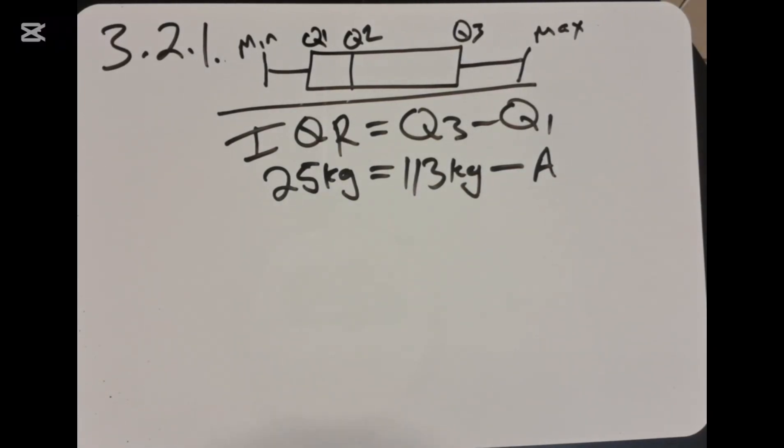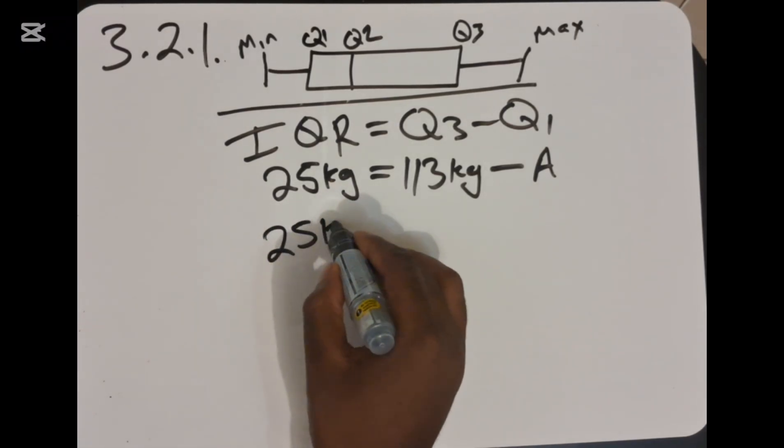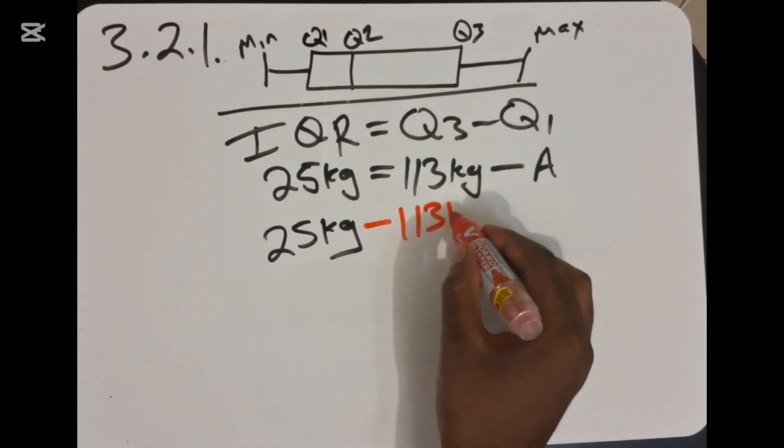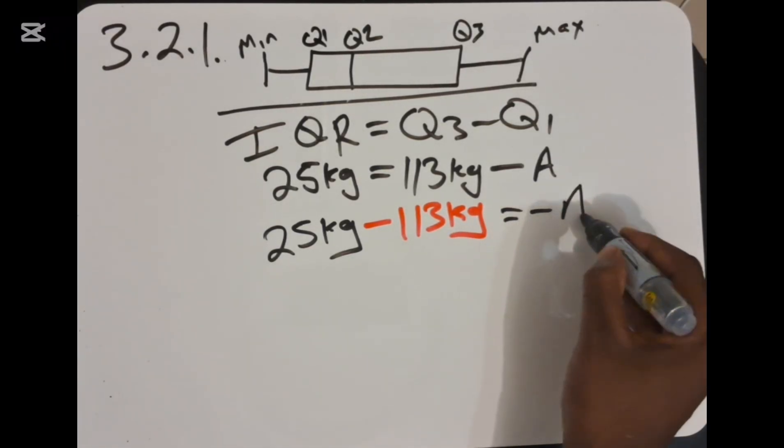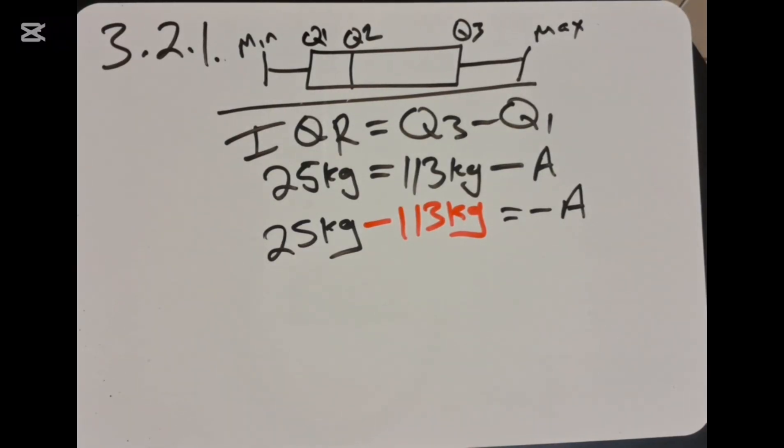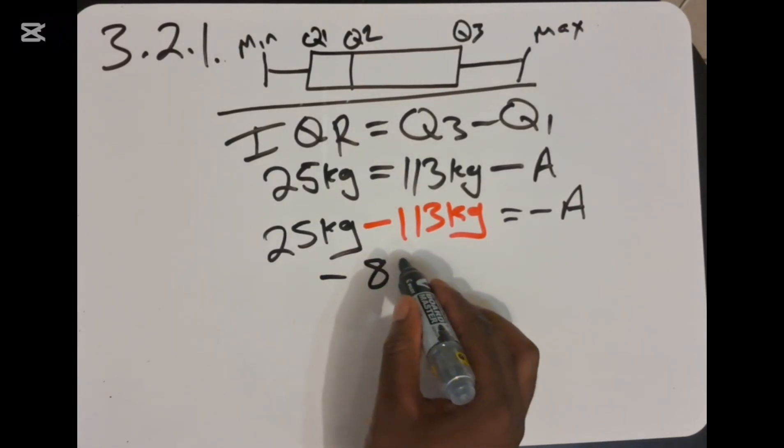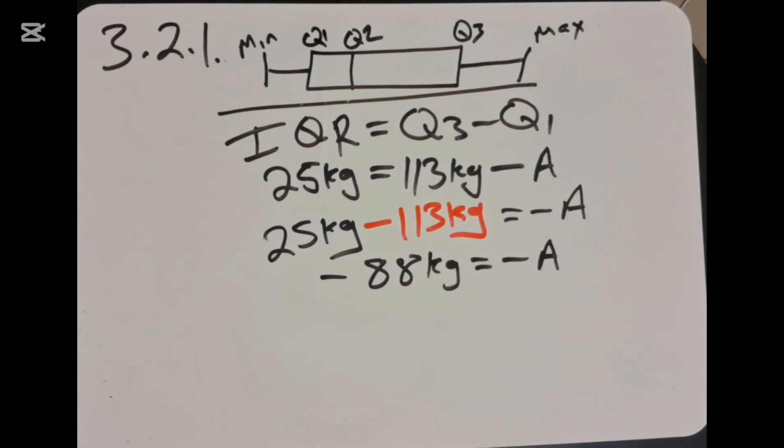The only thing that you need to do is to take this 113 to the other side. We are going to remain with 25 kg. The 113, when we take it to the other side, is going to be negative 113 kg. Let's use a calculator here: 25 minus 113 is negative 88.